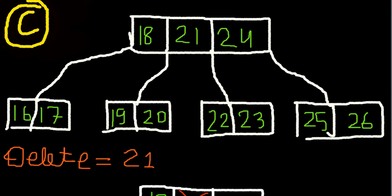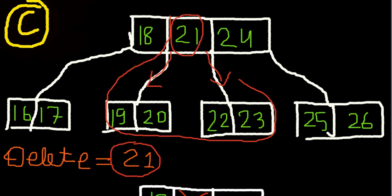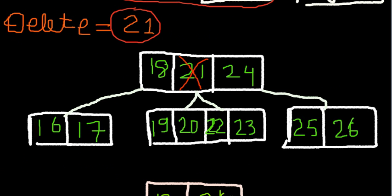The last case: delete 21. It goes to the left — do you have keys greater than the minimum? No. Do you have keys greater than the minimum on the right? No. So we combine everything. We combine everything — this is just a temporary thing shown for explanation.